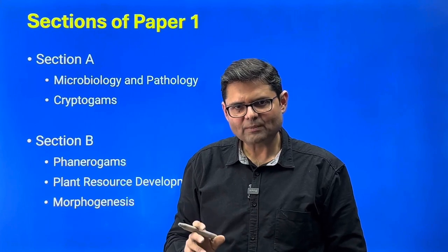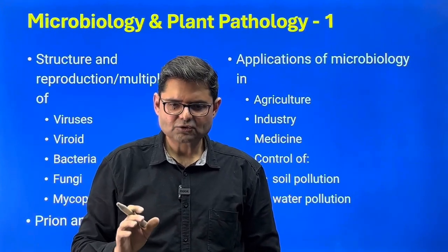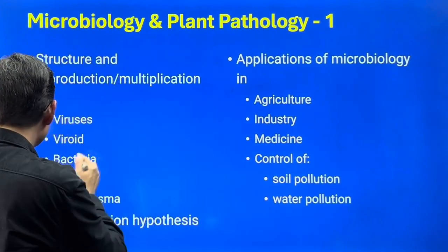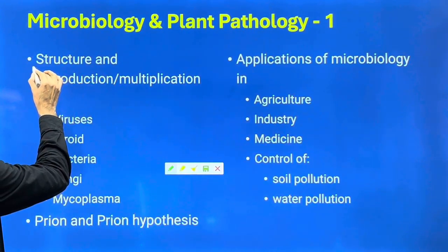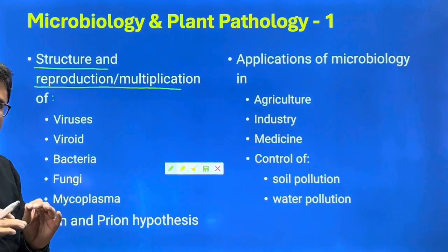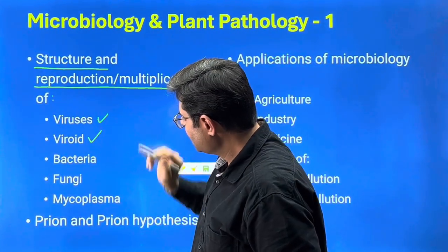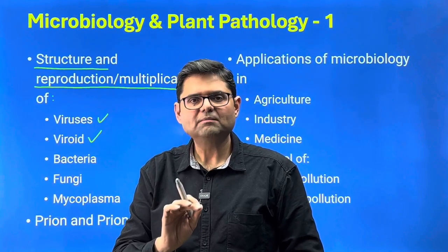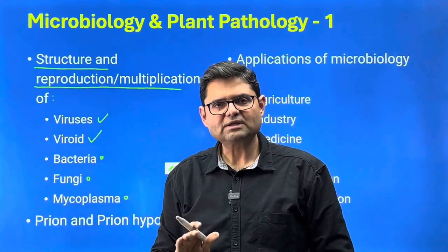Starting with microbiology and plant pathology — two topics mentioned as one, so we divide it into a microbiology part and a pathology part. The first part of microbiology covers structure and reproduction or multiplication of various entities. The wording 'reproduction or multiplication' is carefully chosen: for viruses and viroids, lacking cellular organization, we use 'multiplication'; for bacteria, fungi, and mycoplasmas, we use 'reproduction' as they are proper organisms.